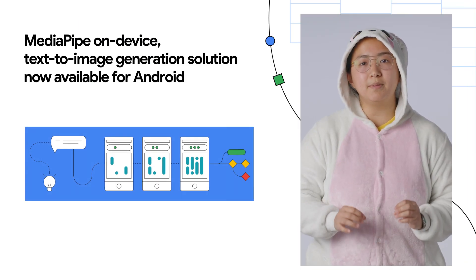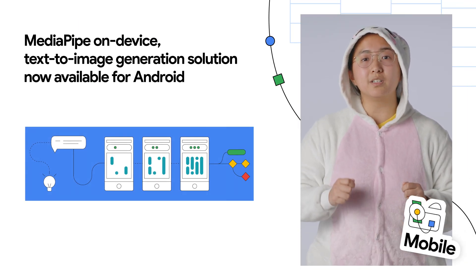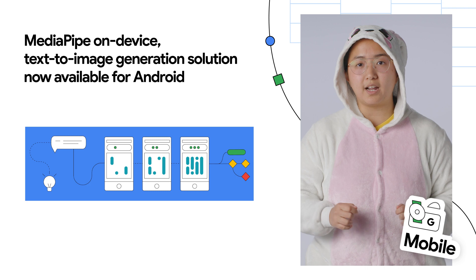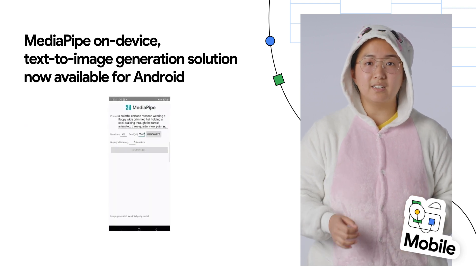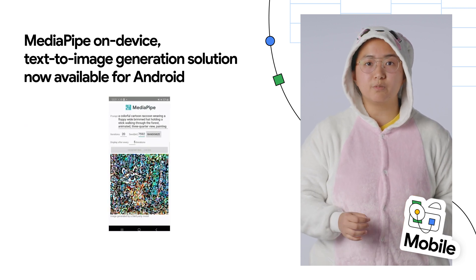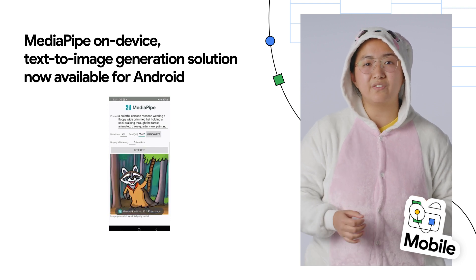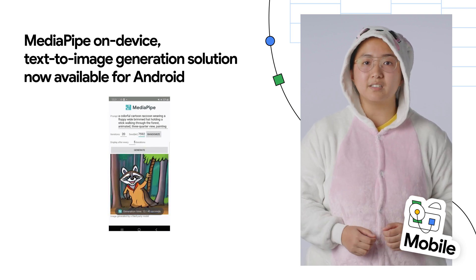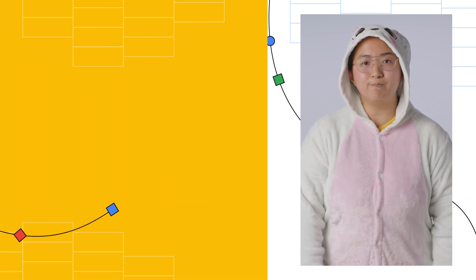We're happy to announce that Image Generator is now available as an early experimental solution for developers to try out on Android devices. Its on-device text-to-image generation with Diffusion Models allows you to easily generate images in as quickly as 15 seconds on higher-end devices. See the blog post in the description for more info.